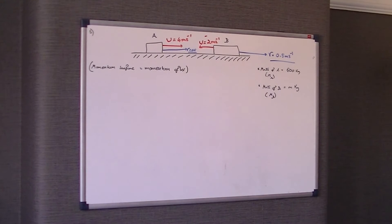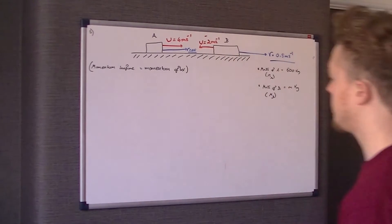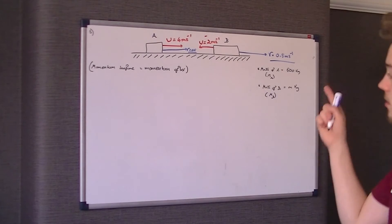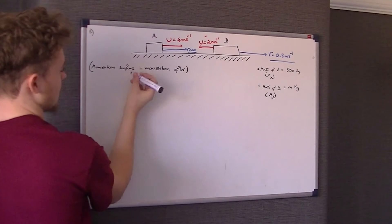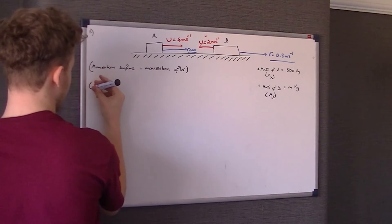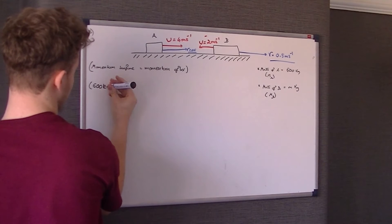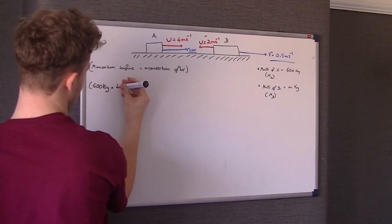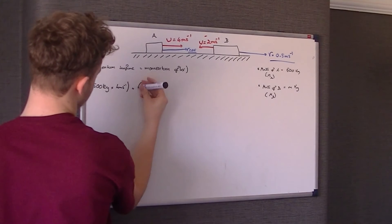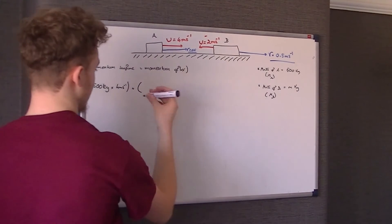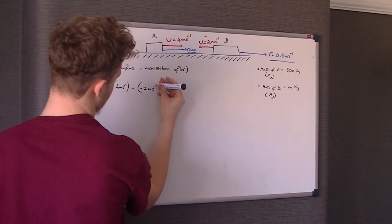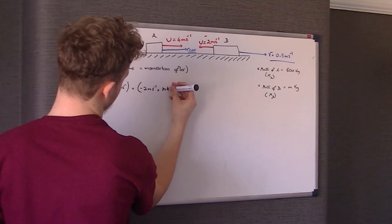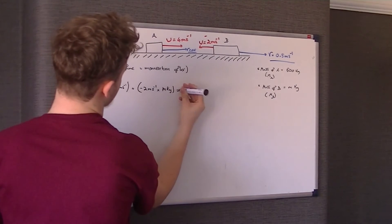So obviously what we've got to do is work out the mass of B. We're going to follow this formula: the quantity of momentum before equals momentum after. The total momentum before — B is going to have a negative momentum. A has momentum of mass times velocity: mass of A is 600 kilograms times the initial velocity of 4 metres per second. Then B has negative 2 metres per second times an unknown mass M kilograms.